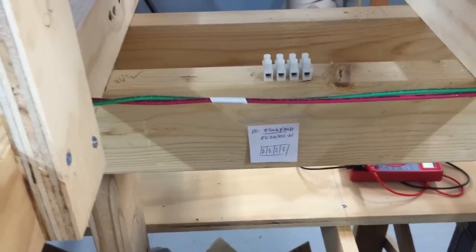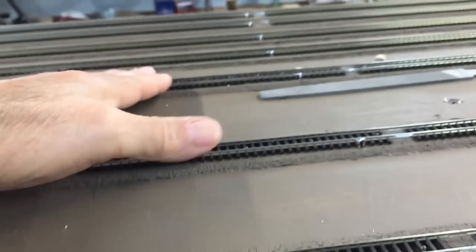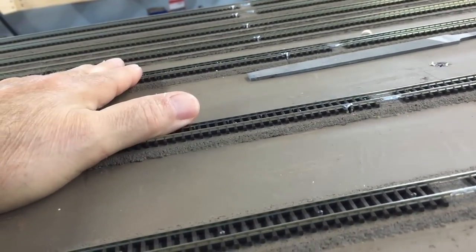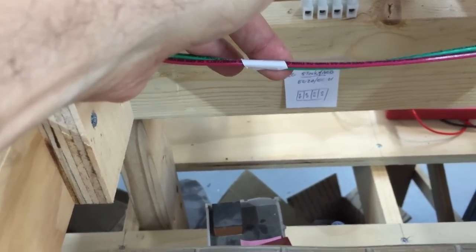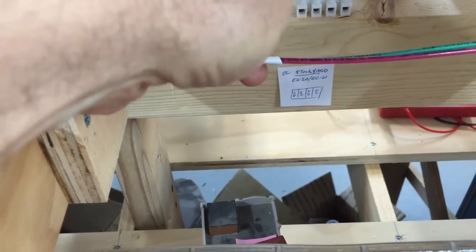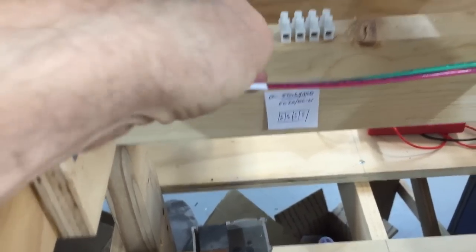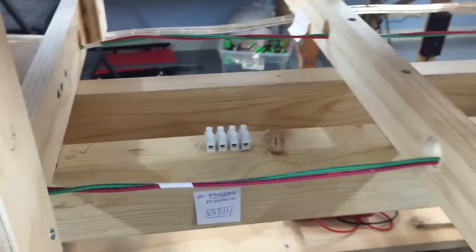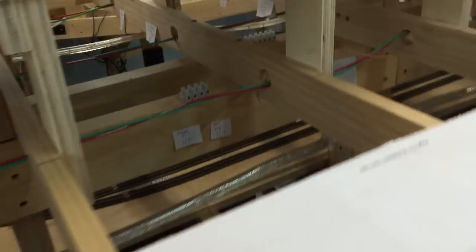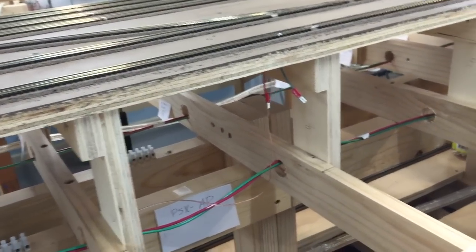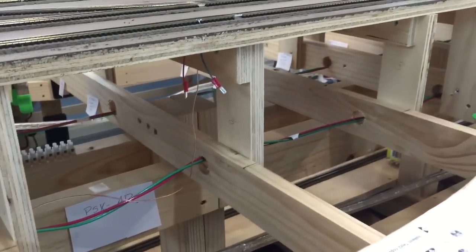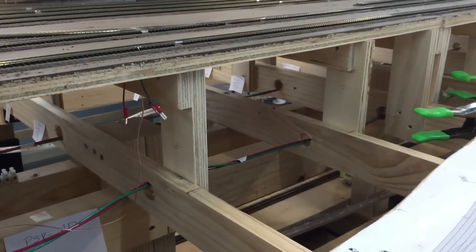And then the final thing here is the power feeds for the two tracks up here that belong to the stockyard. And once again, this 12 gauge wire here with the white strip every so often is power bus number four for power district number four. So anyway, that's kind of what I've been doing. The next thing we'll do is I'll get these terminal strips attached on the work table, bench, whatever we want to call it, and I'll let you see what that is. Thank you for watching. Bye.